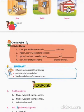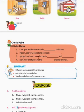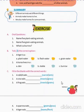Fill in the blanks. Cow, goat, and horse eat only grass and leaves. Pigeons, sparrows, parrots, and hens eat cranes. Spider, lizard, and chameleon eat insects and worms. Lion, wolf, and tiger eat the flesh of other animals.